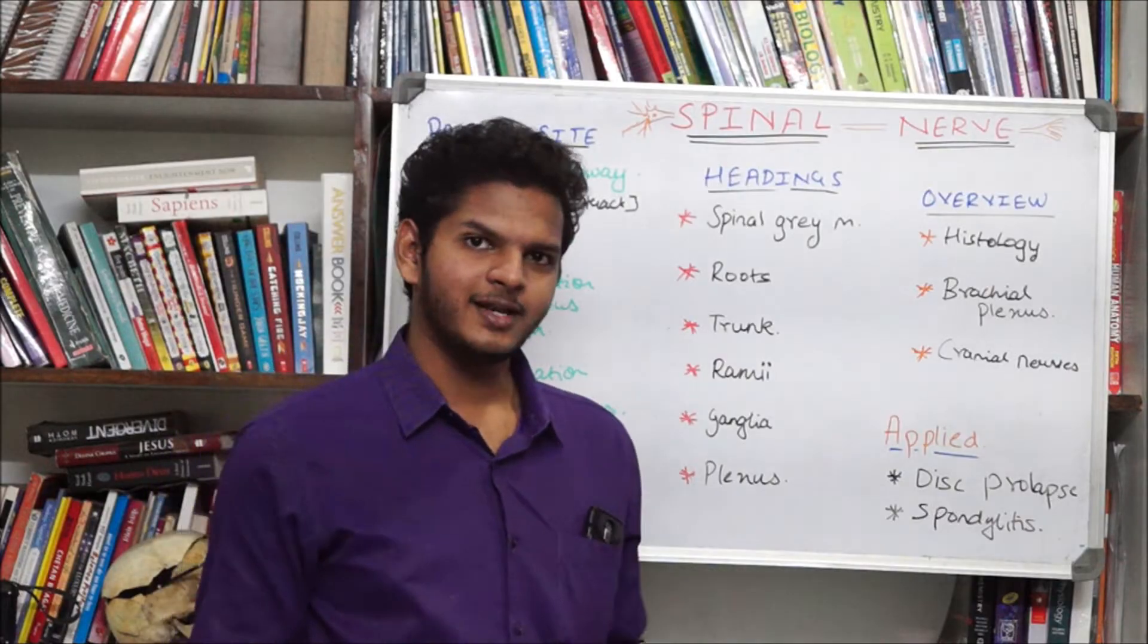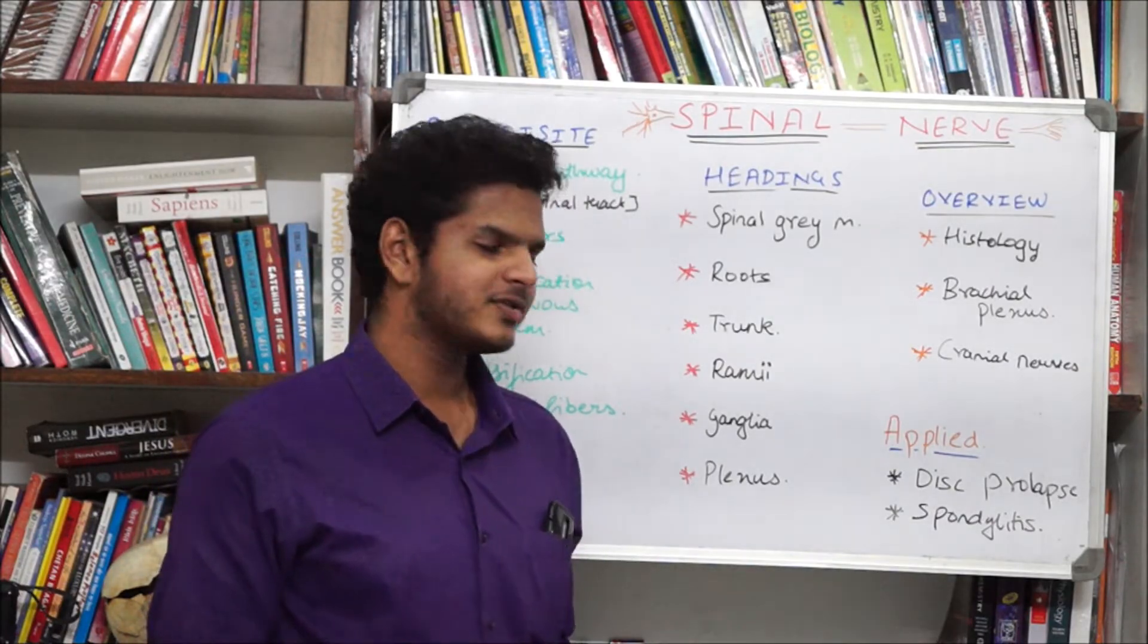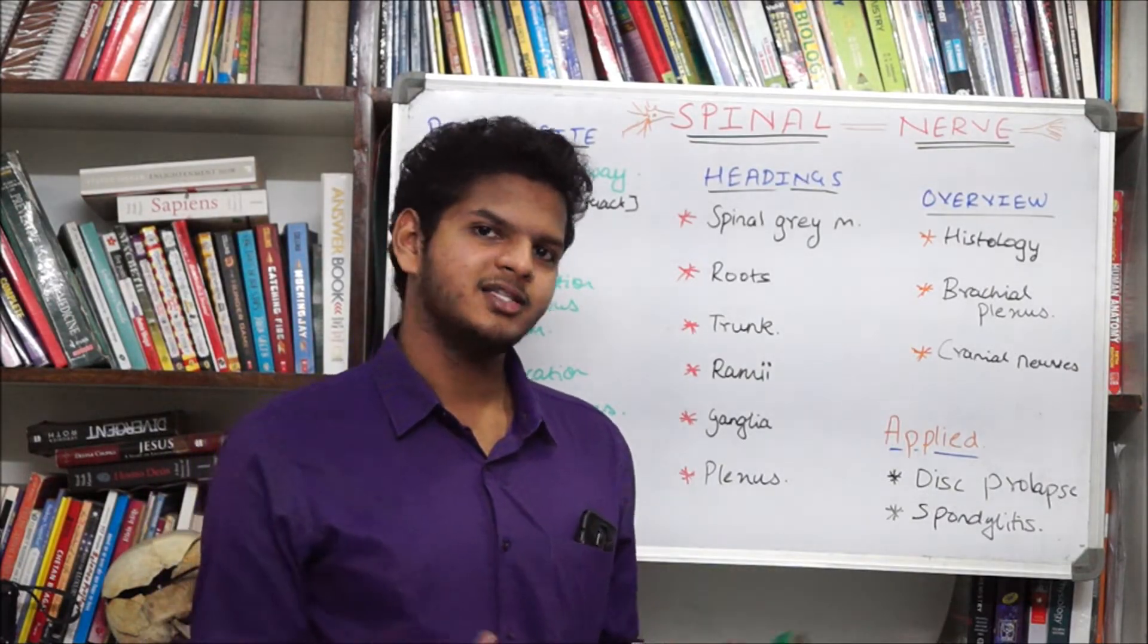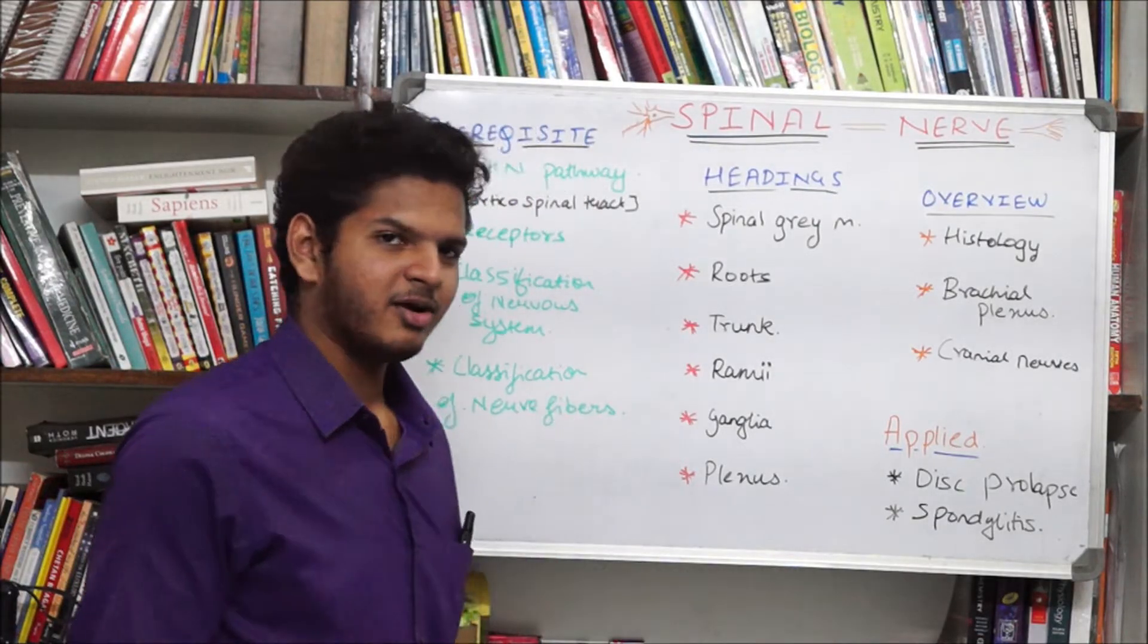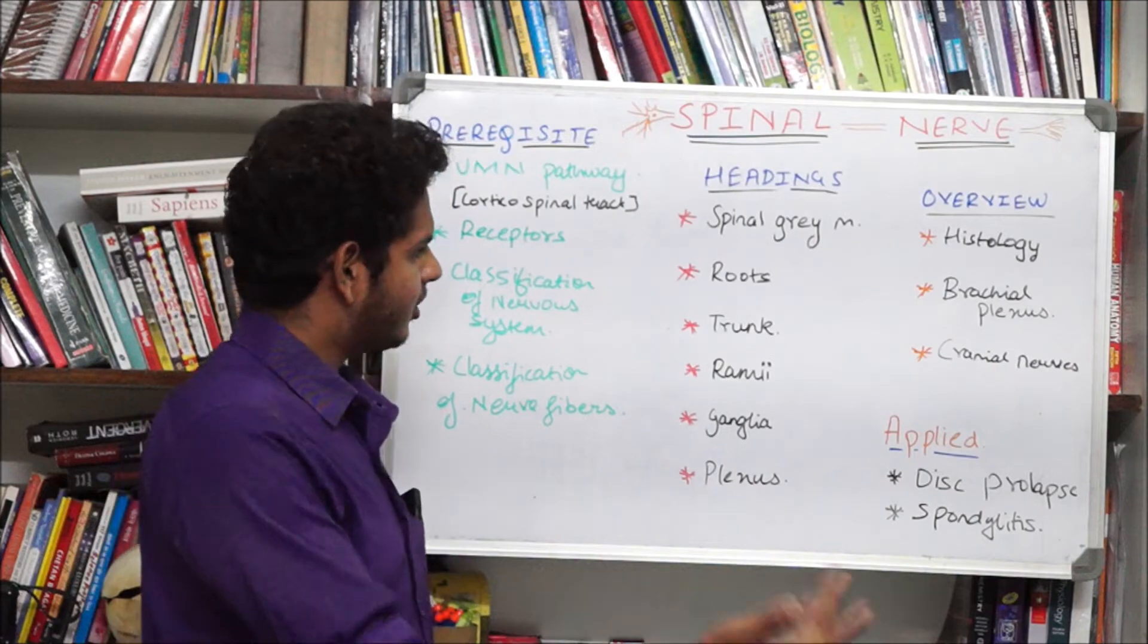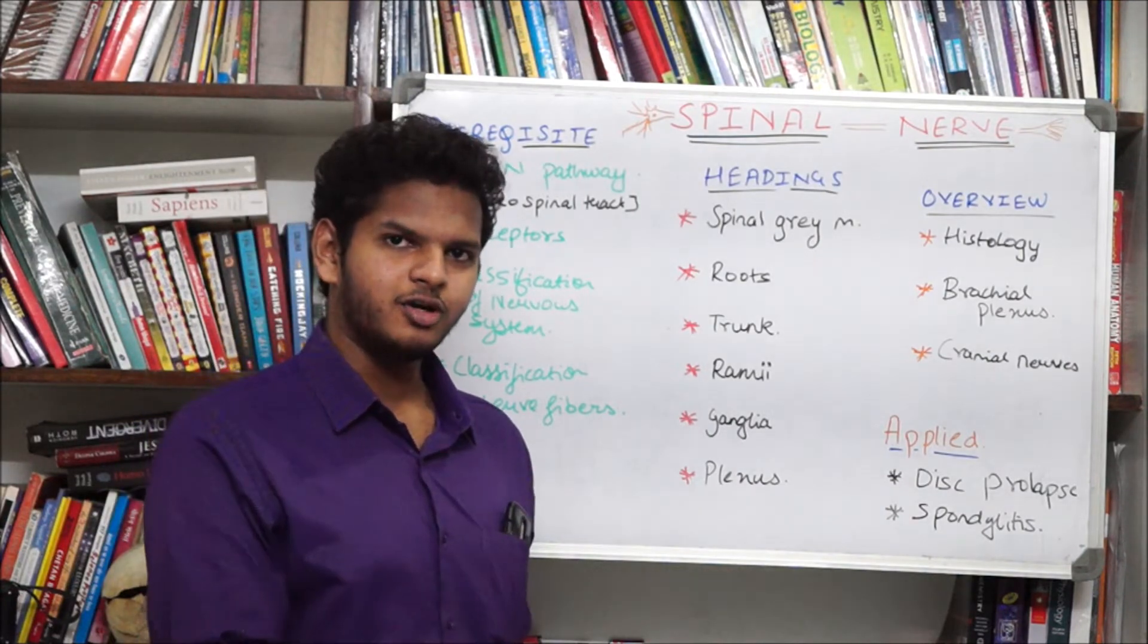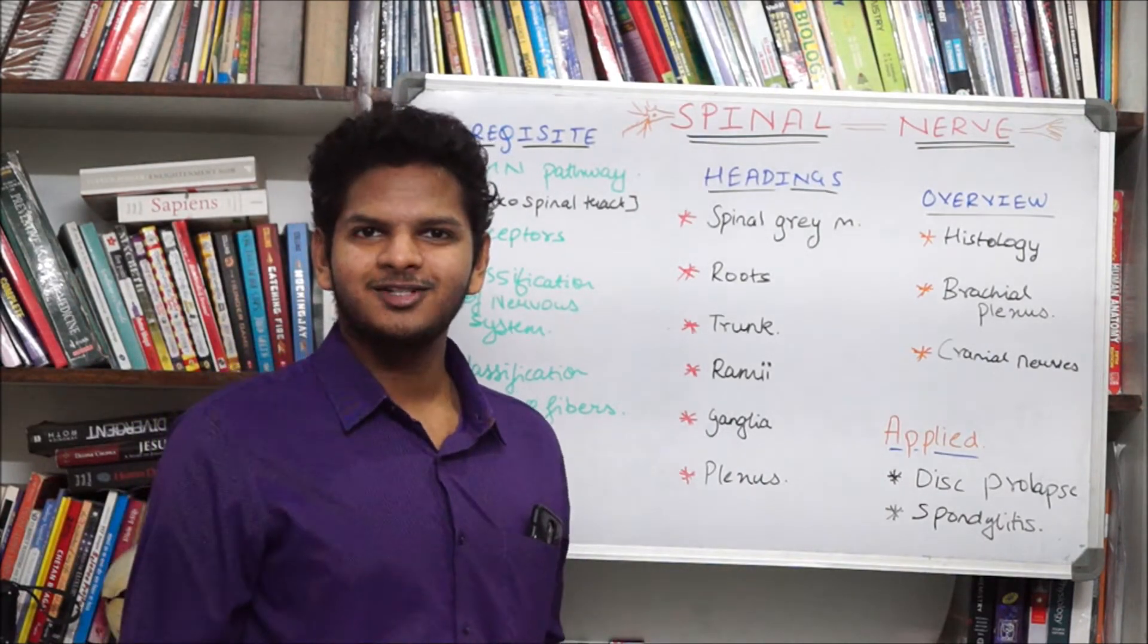The ganglia and some part of the plexus. We are going to overview a bit of the histology of the spinal nerve, the brachial plexus, the cranial nerves, and the applied part as spondylitis and disc prolapse. I have annotations all over so you can skip to any topic which you want. Let's start it up.